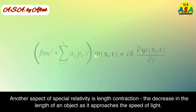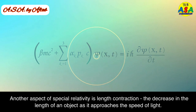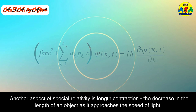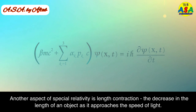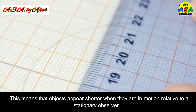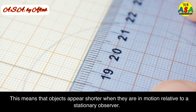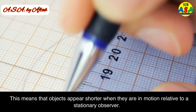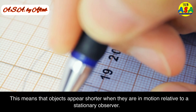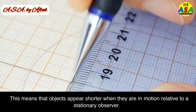Another aspect of special relativity is length contraction — the decrease in the length of an object as it approaches the speed of light. This means that objects appear shorter when they are in motion relative to a stationary observer.